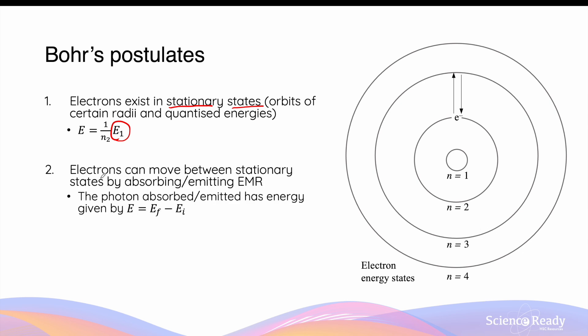Bohr's second postulate states that electrons in an atom can move between stationary states by either absorbing or emitting electromagnetic radiation, EMR. When electrons absorb EMR, they can go up to a higher energy level. And when they release EMR, they can go down to a lower energy level. The energy absorbed or emitted is exactly equal to the difference in energy between stationary states that the electrons are transitioning between. In other words, the photon, which is radiation that is absorbed and emitted, has the energy given by the difference in energy between the final orbit and the initial orbit that the electron started with.